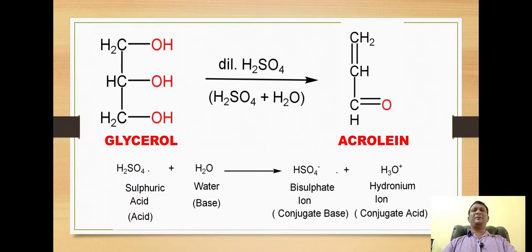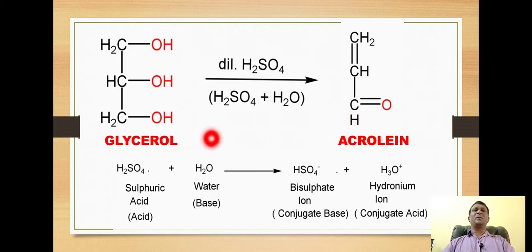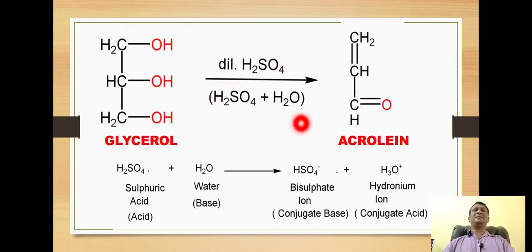This reaction represents the conversion of glycerol to acrolein. Glycerol is a trihydroxy compound and it is called propane-1,2,3-triol. Acrolein is an example of an alpha-beta unsaturated carbonyl compound. The reaction takes place in the presence of dilute sulfuric acid, which is used as a catalyst. So this reaction is considered an acid-catalyzed conversion of glycerol to acrolein.